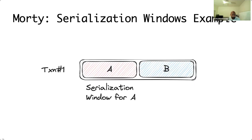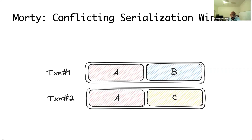Let's understand this with an example. Here, we can see transaction 1 operating on two data objects, A and B. It involves reading the previous value of A and then updating it. The red box showcases the serialization window of A, where A's value was read and written multiple times, and the last write marks the end of the window. This figure talks about conflicting serialization windows. We have two transactions: T1 operating on A and B, and T2 operating on A and C. These transactions have conflicting serialization windows, as both are trying to operate on A. So in a traditional setting, one of the two transactions would have to be aborted.